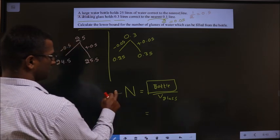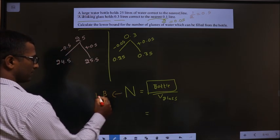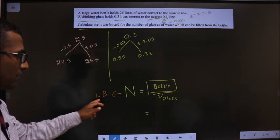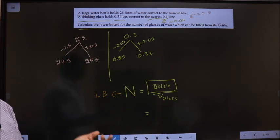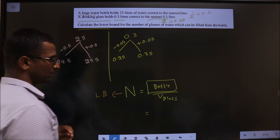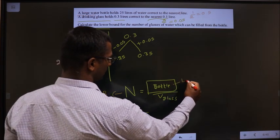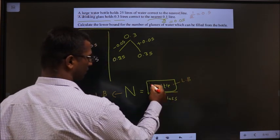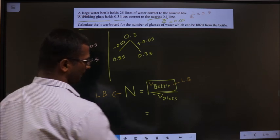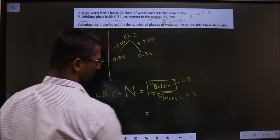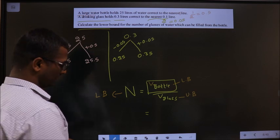For this, I should get the lower bound. For the number of glasses, the lower bound can only happen if I take the lower bound for the volume of the bottle and the upper bound for the glass.